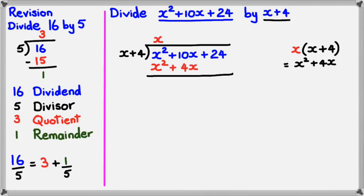The whole point of x squared plus 4x is so I can get rid of the x squareds. Now, I need to subtract all of the red characters from the blue ones. So, x squared minus x squared is 0, and 10x minus 4x would equal 6x. The next part — the 24 — I need to bring it down. So, it's going to be 6x plus 24.